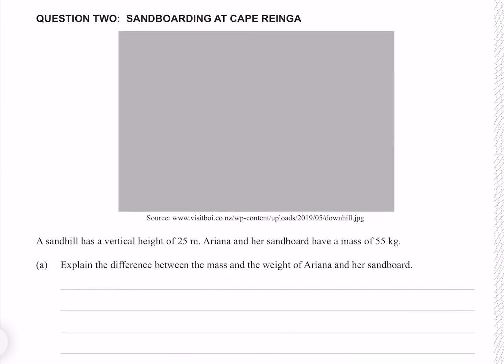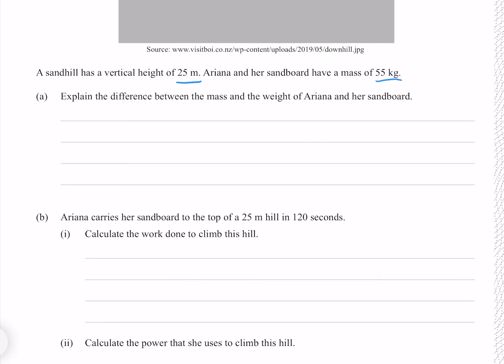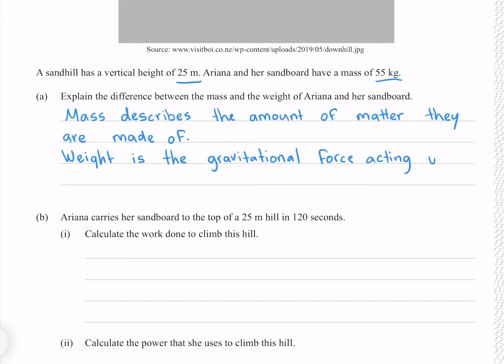Question 2. A sandhill has a vertical height of 25 meters. Ariana and her sandboard have a mass of 55 kilograms. Explain the difference between the mass and the weight of Ariana and her sandboard. Given how often this question comes up in these exams, this should be a distinction that you're very ready to make. Mass describes the amount of matter they are made of, weight is the gravitational force acting upon this mass.